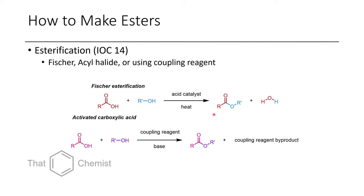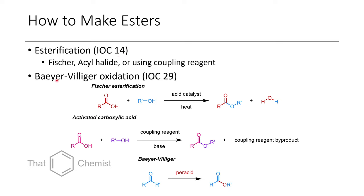Now let's break these down by reaction type. Ways to make esters: you can do an esterification involving a carboxylic acid and an alcohol, via a Fischer esterification, an acyl halide, or a coupling reagent — see lecture 14 for more on those. Additionally, the Baeyer-Villiger oxidation produces esters from ketones, as shown here — see video 29 for that.